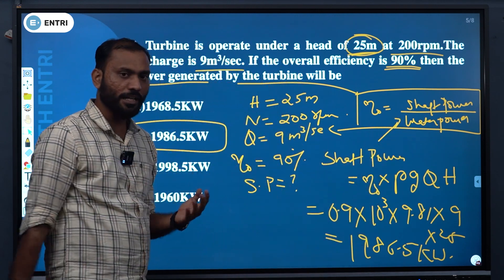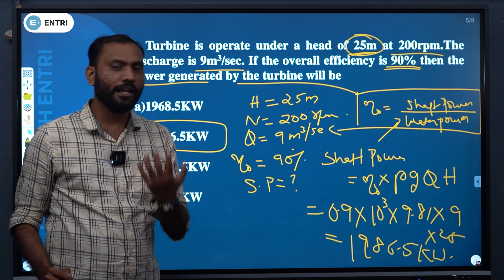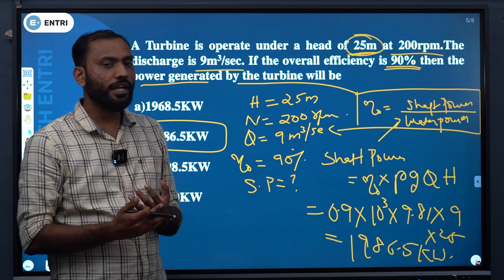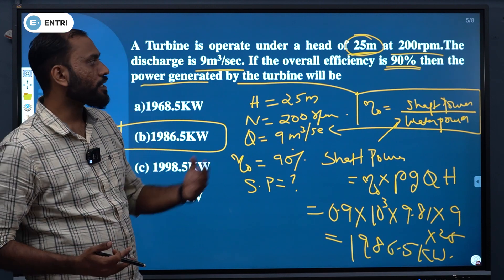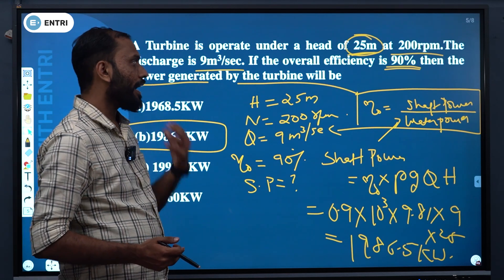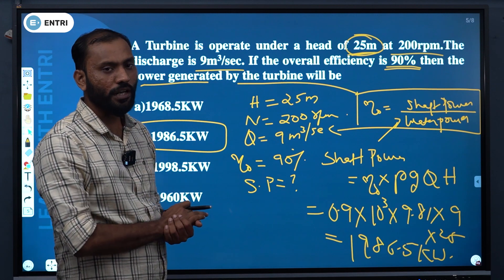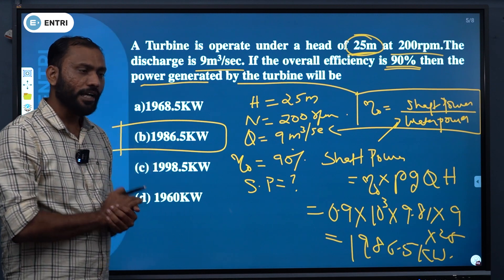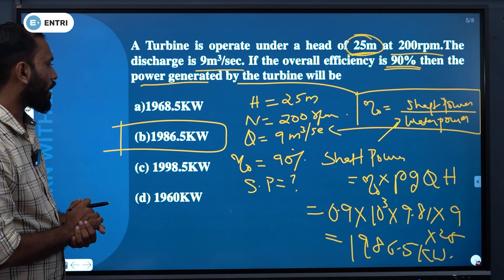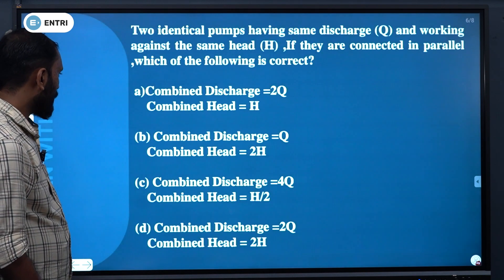This involves the hydraulic efficiency equation and the mechanical efficiency equation. These are simple numerical questions on the efficiency of a turbine. The equations are correct. Clear?